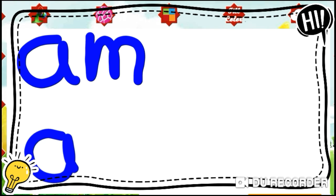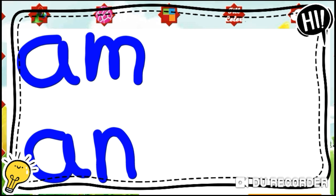Next is 'an' — A for aeroplane, N for nest. A-N, 'an'. Again you have to write these between two blue lines.